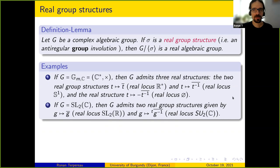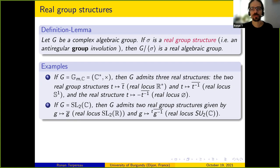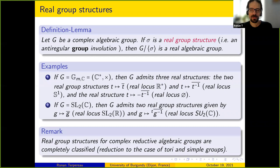But of course there are also real structures which are not real group structures. For instance, G ↦ -Ḡ sends the identity to minus the identity, so it's not a real group structure. This notion of real group structure is very well understood: for complex reductive algebraic groups you can reduce to tori and simple groups, for tori there is an explicit description, and for simple groups there are tables.